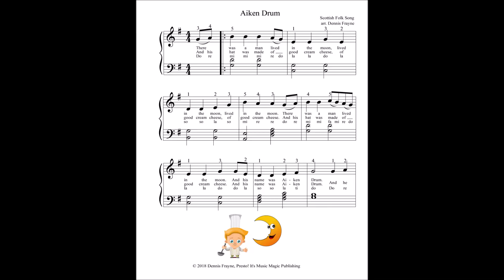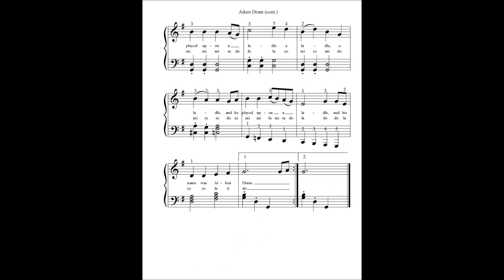So when we sing Aiken Drum, the first verse goes like this: There was a man lived in the moon, lived in the moon, lived in the moon. There was a man lived in the moon, and his name was Aiken Drum. Then we get to the chorus: And he played upon a ladle, a ladle, a ladle. And he played upon a ladle, and his name was Aiken Drum.